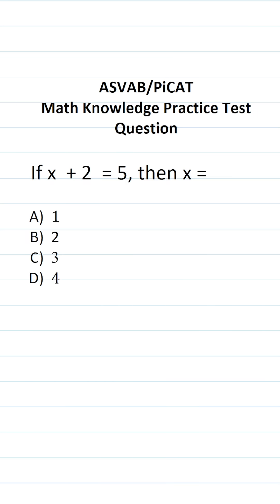This math knowledge practice test question for the ASVAB and AFQT says: if x plus 2 equals 5, then x equals. In other words, we want to solve this equation for x.